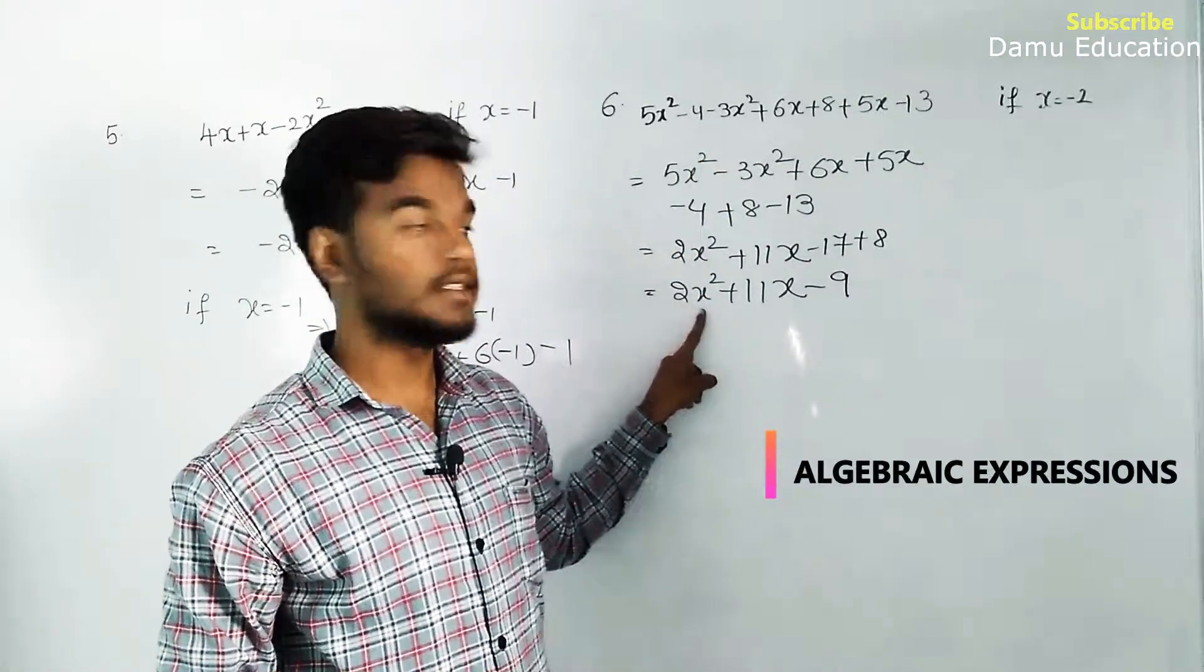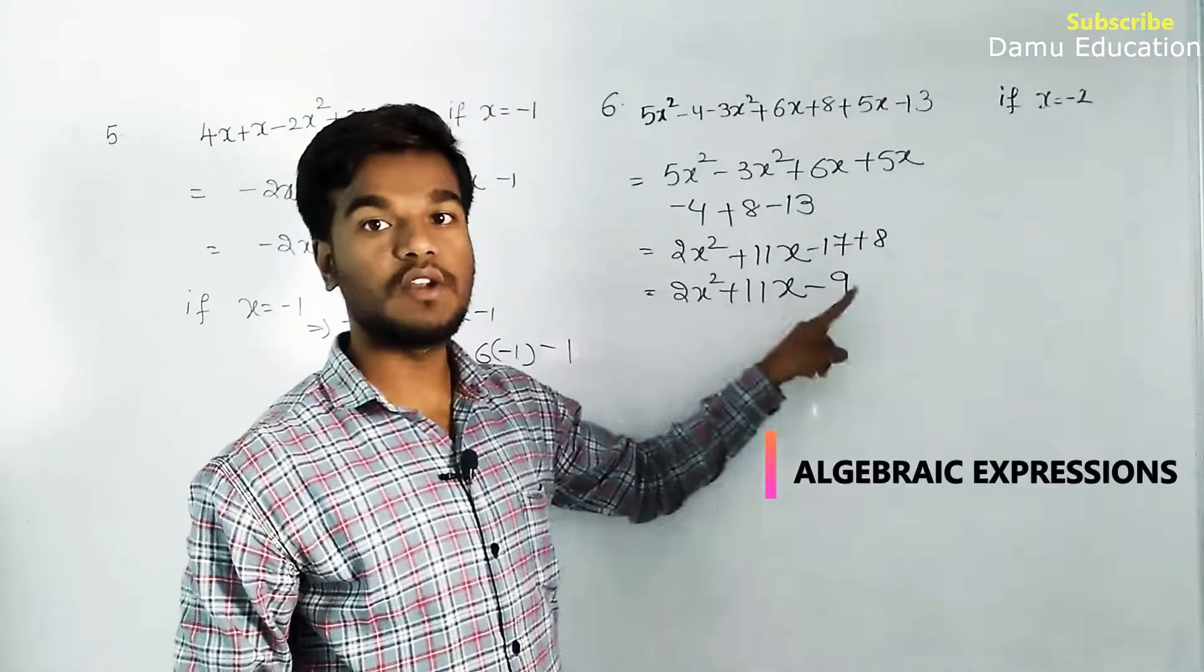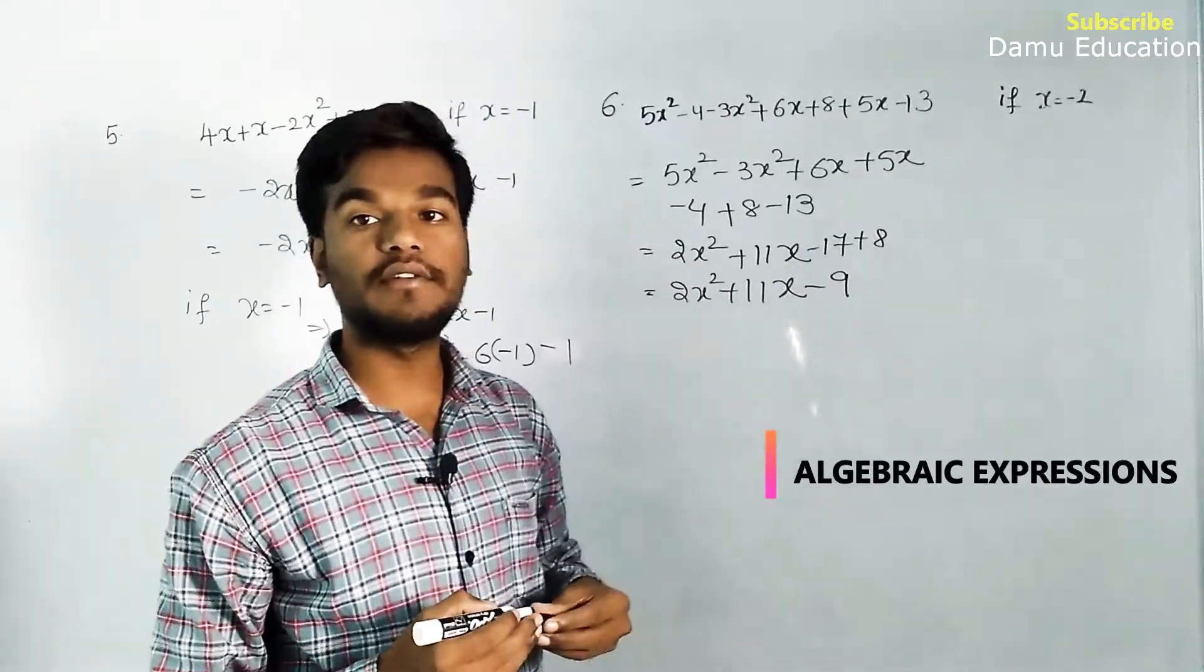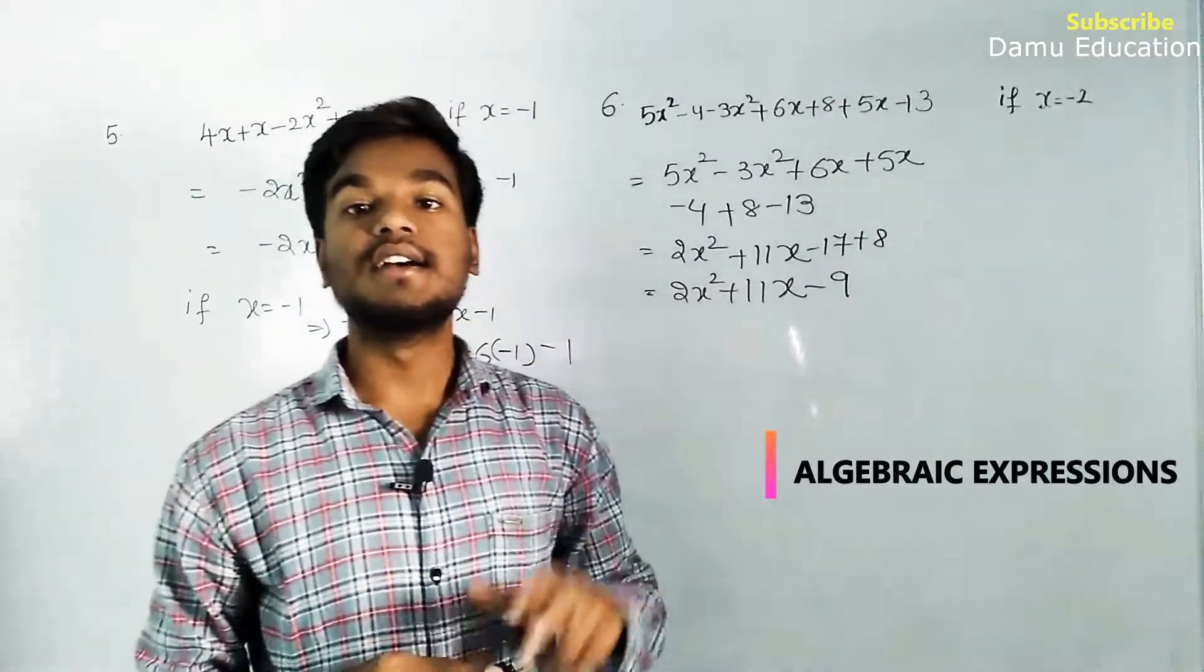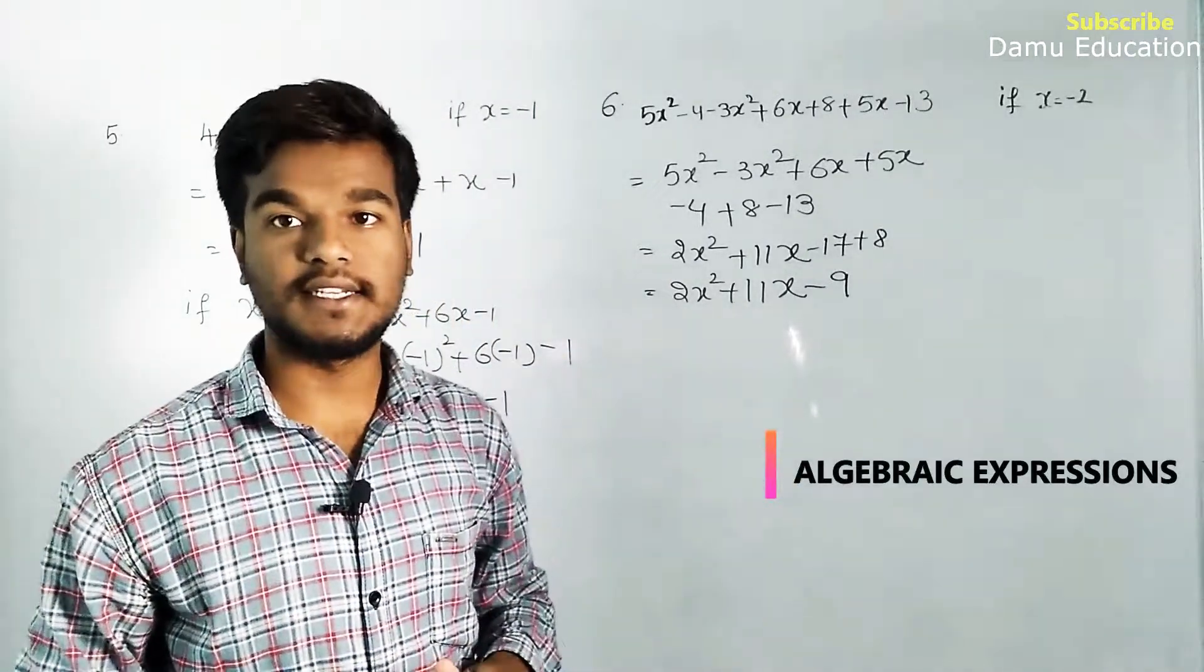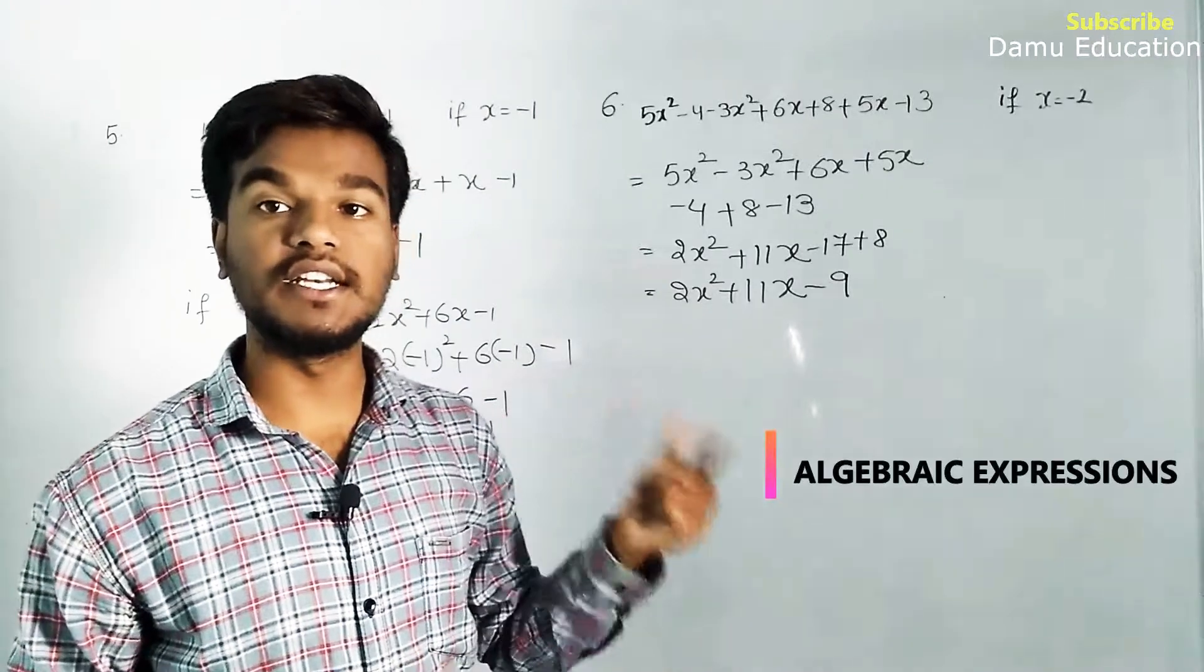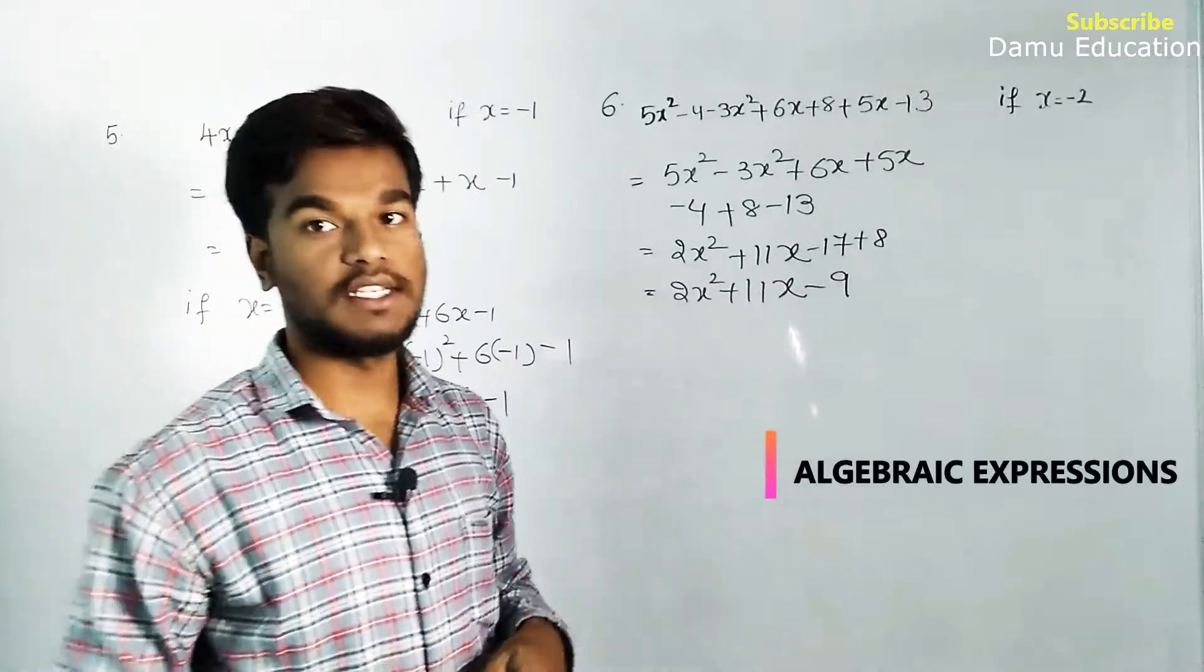Only 2x² is there, only one x term, one constant. This is the format ax² + bx + c. If degree is 2, we call it a quadratic equation.